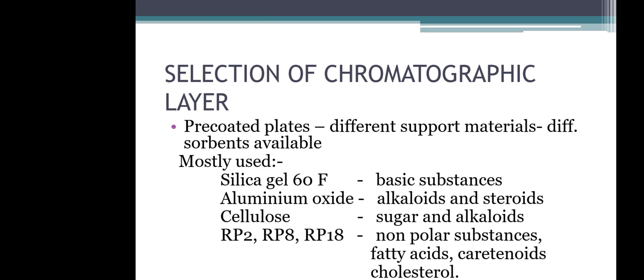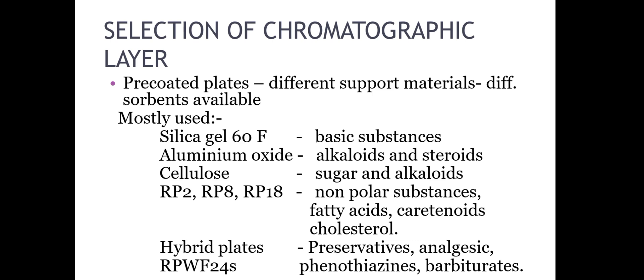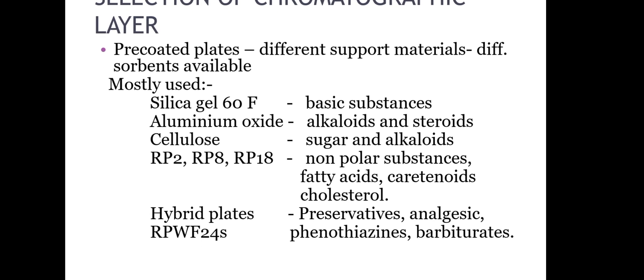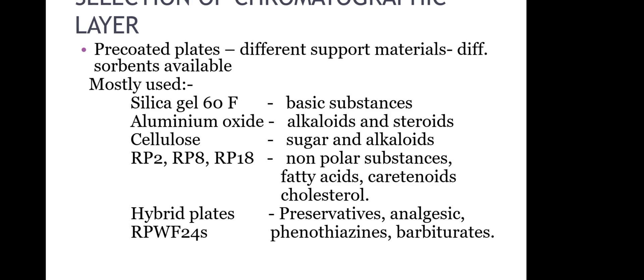Chromatographic layer selection includes precoated plates with different support materials such as aluminum layer, aluminum foil, glass, and plastic plates. The most used sorbents are: silica gel 60F for separation of basic substances; aluminum oxide sorbent for alkaloids and steroid separation; cellulose for sugar and alkaloid separation; RP2, RP8, RP18 for non-polar substances, fatty acids, carotenoids, and cholesterol; and hybrid plates including RPWF24S for preservative, analgesic, phenothiazines, and barbiturate separation.